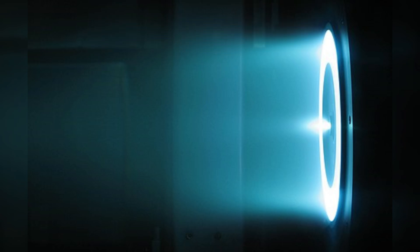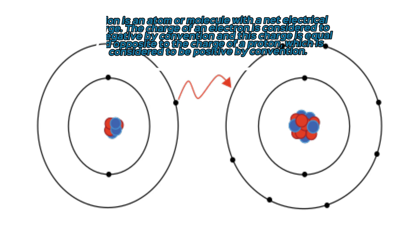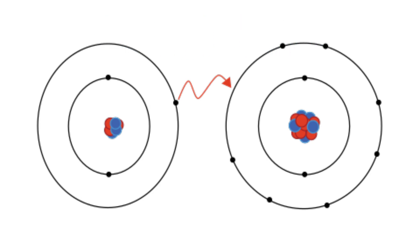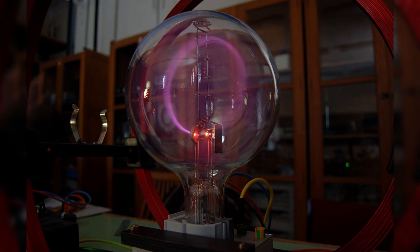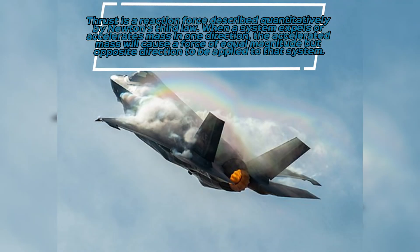An ion thruster creates a cloud of positive ions from a neutral gas by ionizing it to extract some electrons from its atoms. The ions are then accelerated using electricity to create thrust.